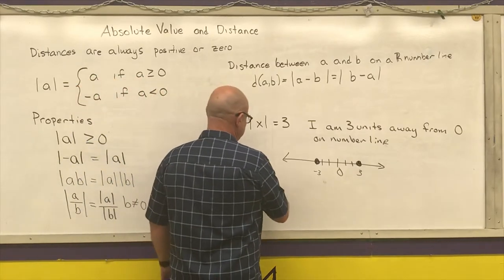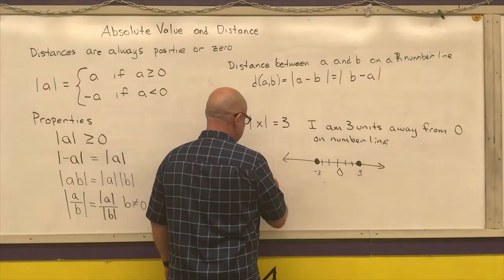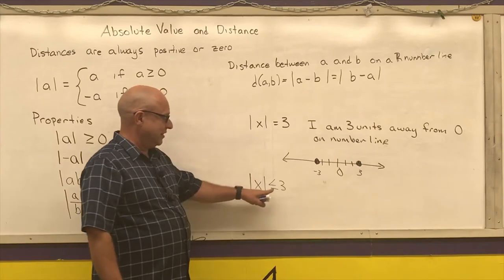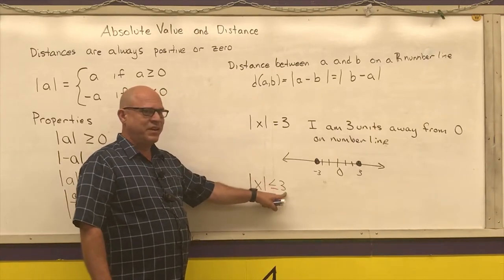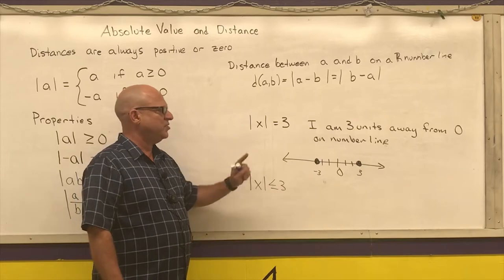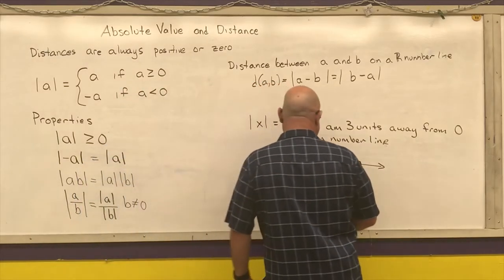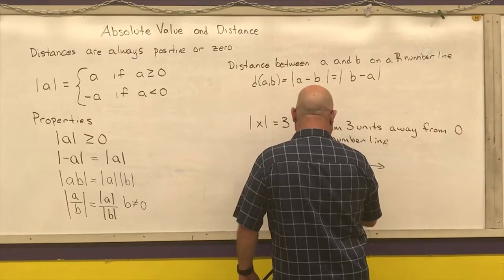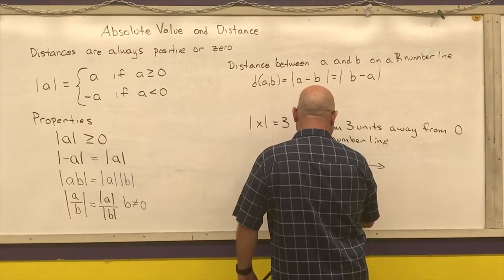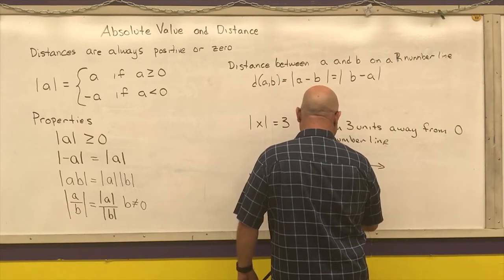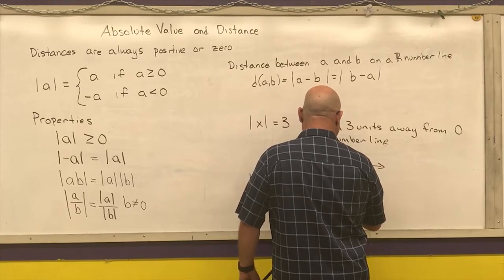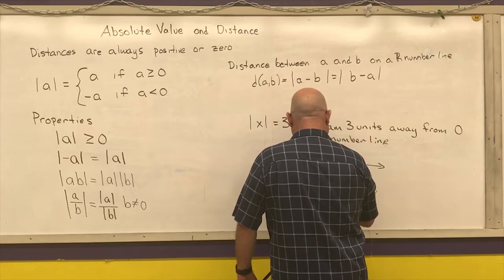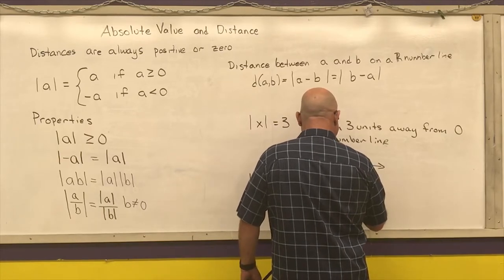Where this comes into play is when I do absolute values within inequalities. Absolute value of x is less than or equal to three means x is every number within three of zero on the number line. So that would be every number within three from zero on the number line, all of those numbers.